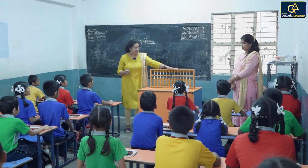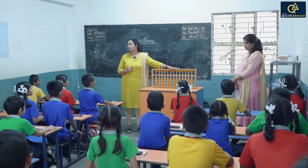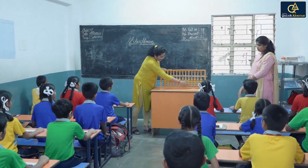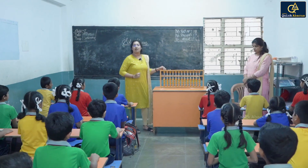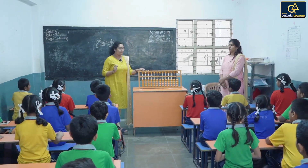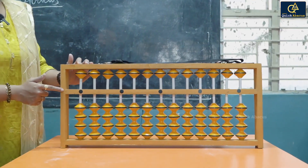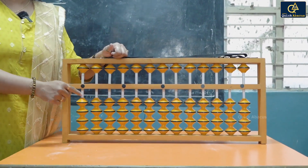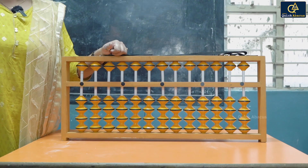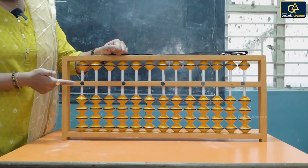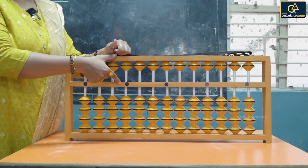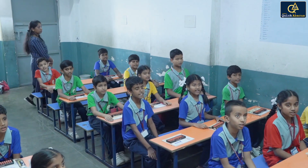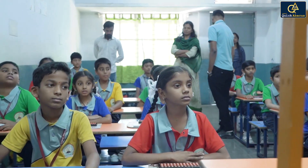As you can see, this is called the abacus tool. It has portions above the divider and below the divider.